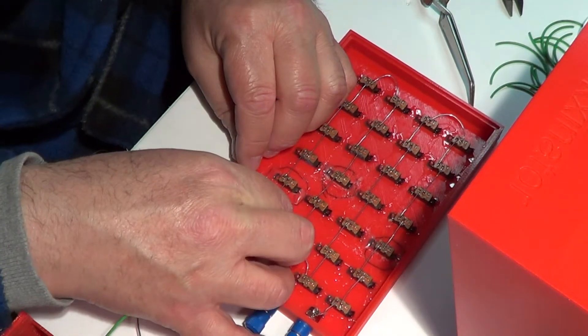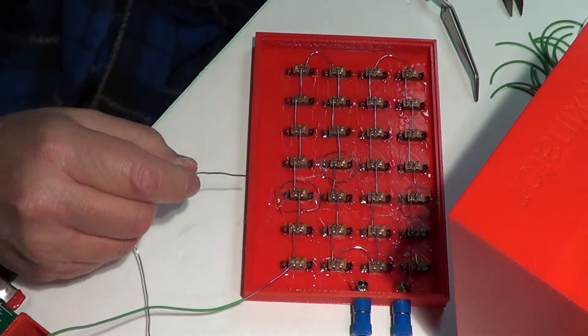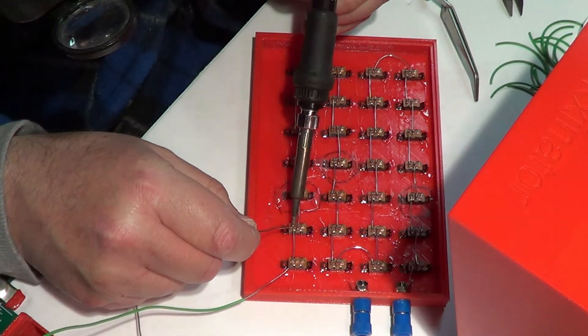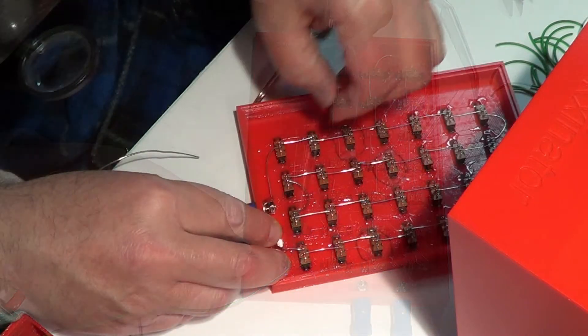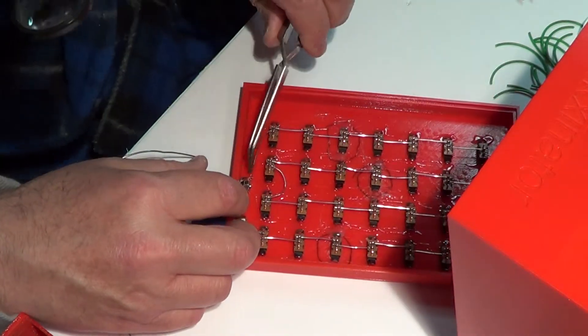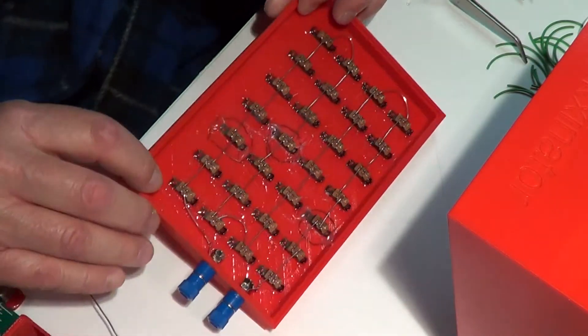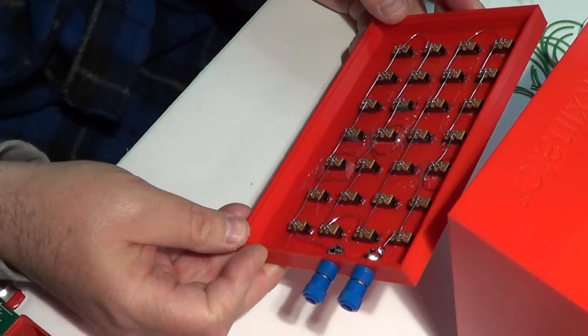I started the wiring by connecting one of the binding posts to the first switch, then I connected one by one all the switches in series, making sure to leave the last one closest to the second binding post, so I could connect it in series with that switch. You can see the final result of this stage of the wiring.